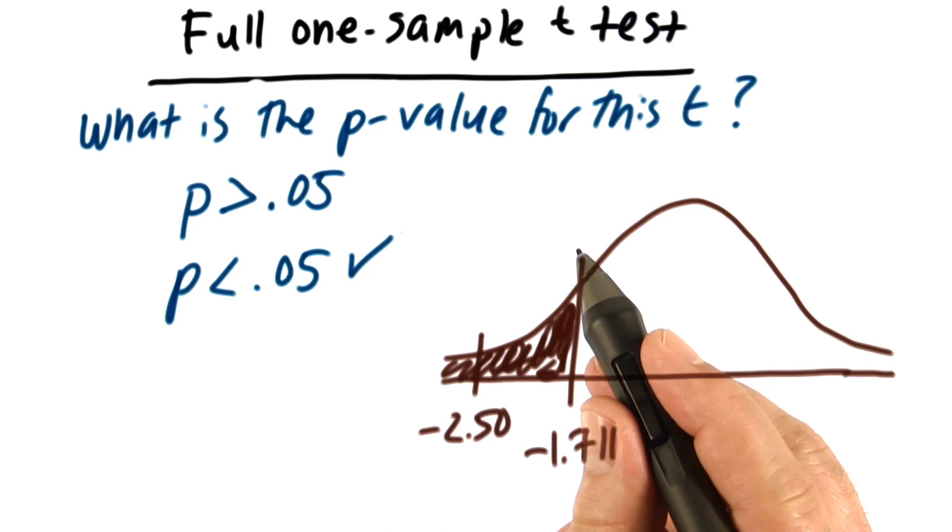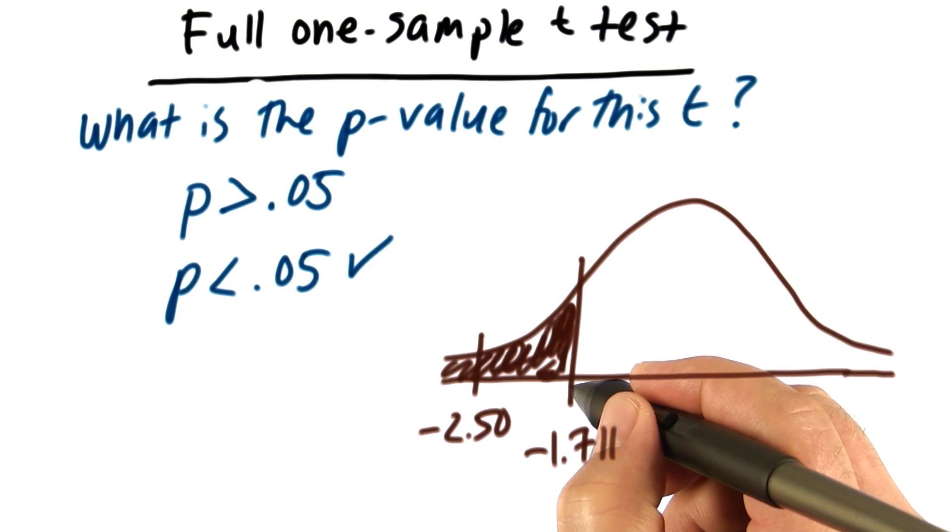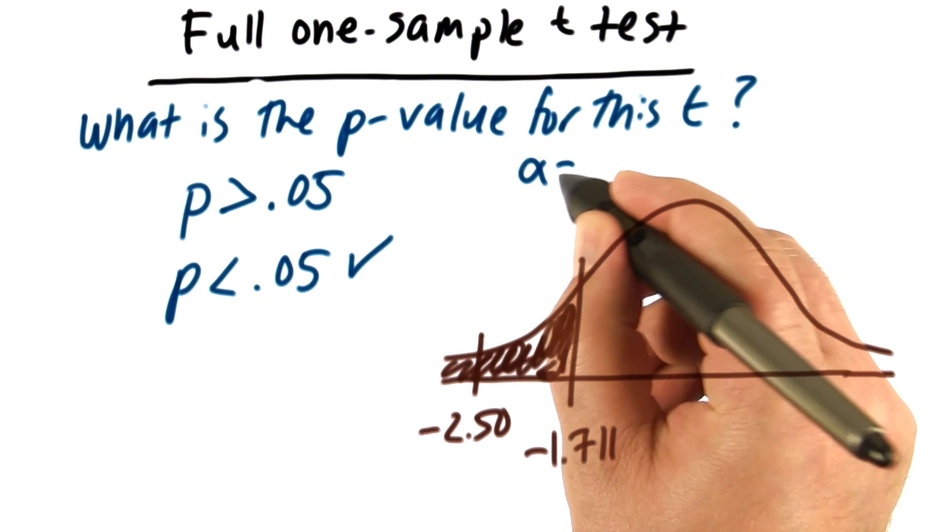The answer is less than 0.05. Here's how we know that. Remember we did a 5% test. Alpha equals 0.05.